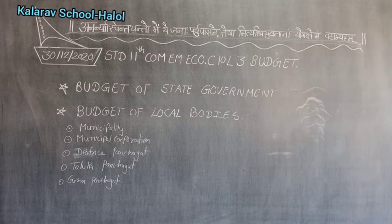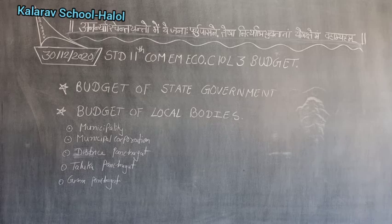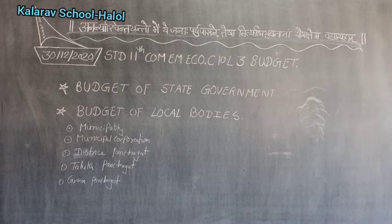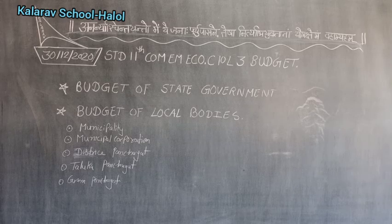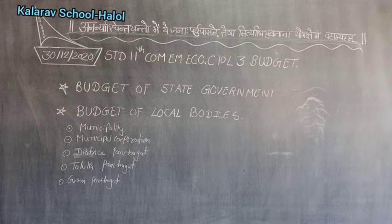Now let's look at expenditure. Whatever expenses are done by the government in the development process constitute one kind of expenditure. Social services like education, health, nutrition, family welfare, water supply, sanitation, welfare of schedule caste, schedule tribe, other backward classes and so on. Second, economic services like agriculture, rural development, irrigation, industry, minerals, transport, communication, science and technology, and environment.